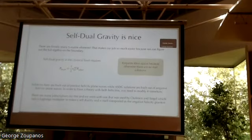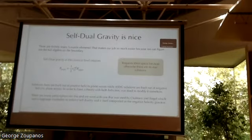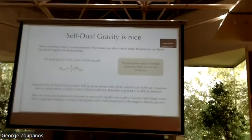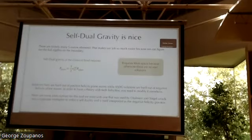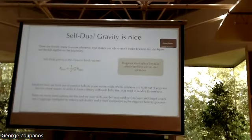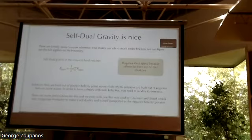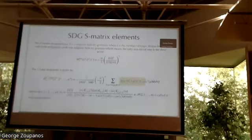There's also the question of how you get both helicity gravitons. Solutions to the self-dual equation are built out of positive helicity plane waves, whereas the anti-self-dual case gives negative helicity plane waves. Rather than figuring out exactly the best prescription, we chose the one used by Chalmers and Siegel, where a Lagrange multiplier in the Lagrangian enforces the self-duality condition but also plays the part of the negative helicity graviton — so you end up having both positive and negative helicity modes.